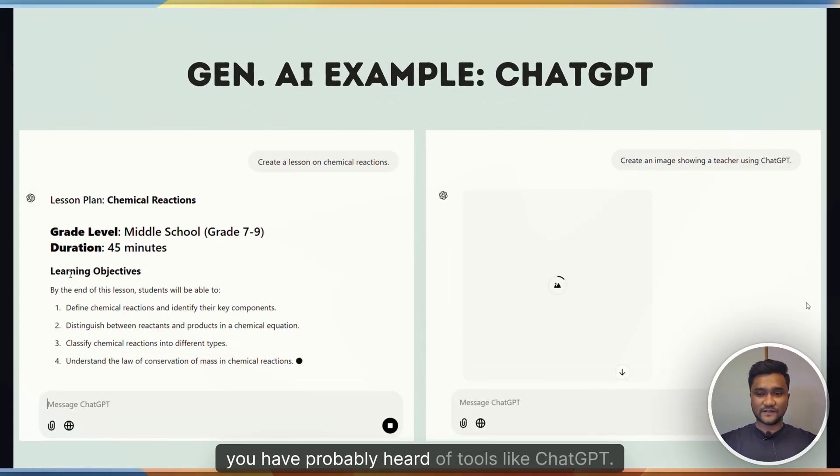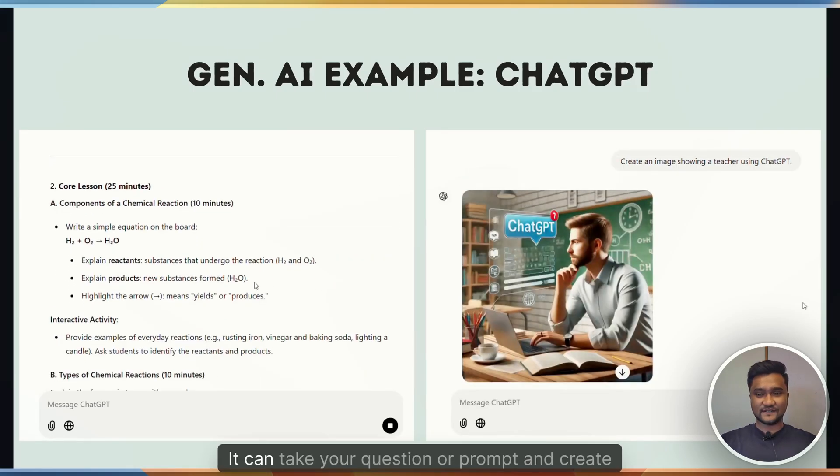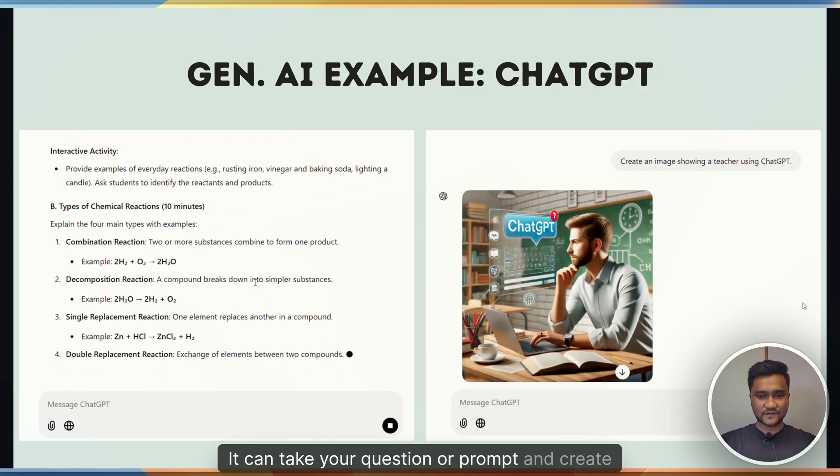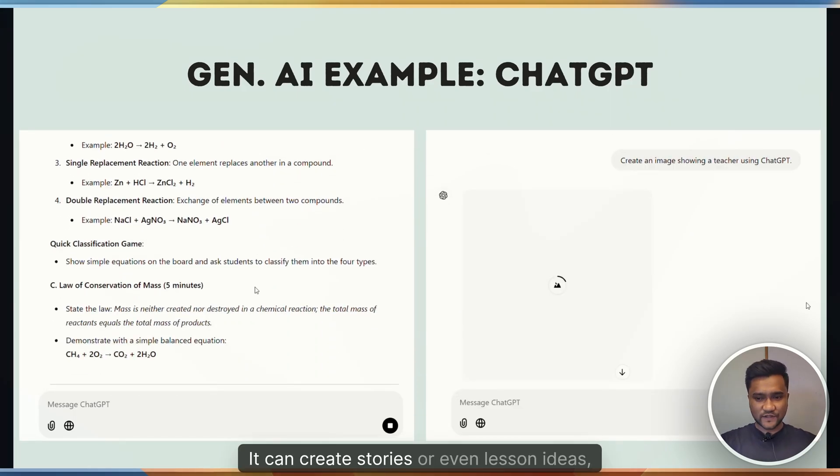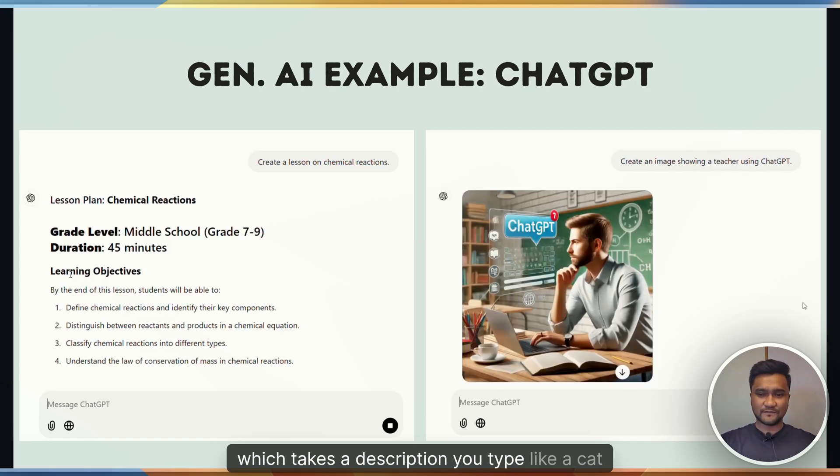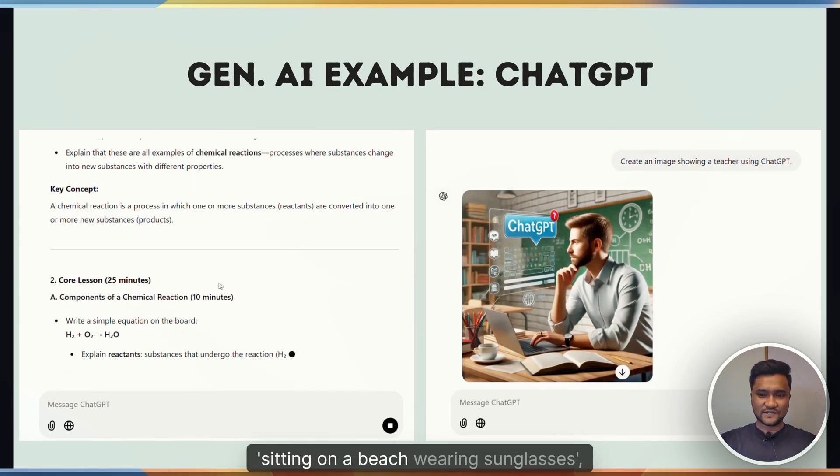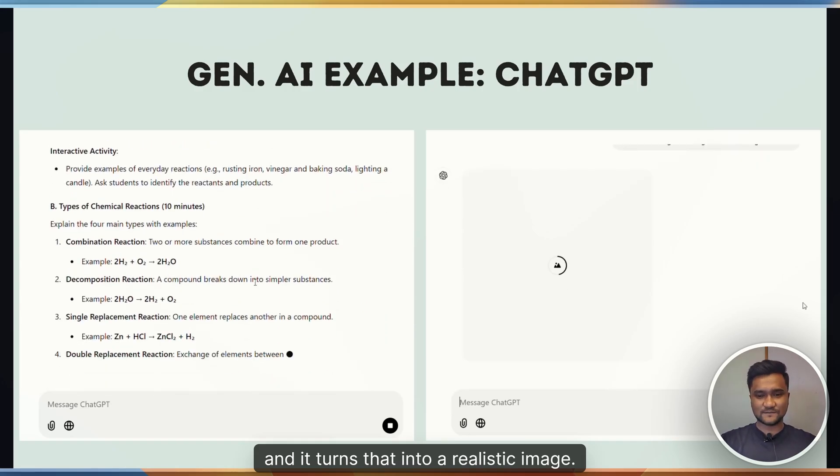For example, you've probably heard of tools like ChatGPT—that's generative AI. It can take your question or prompt and create detailed responses, stories, or even lesson ideas. Or DALL-E, which takes a description you type like 'a cat sitting on a beach wearing sunglasses' and turns that into a realistic image.